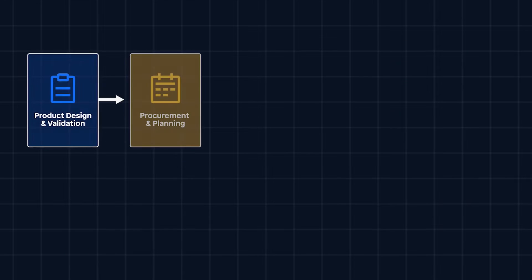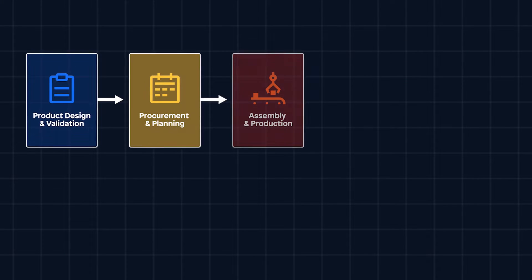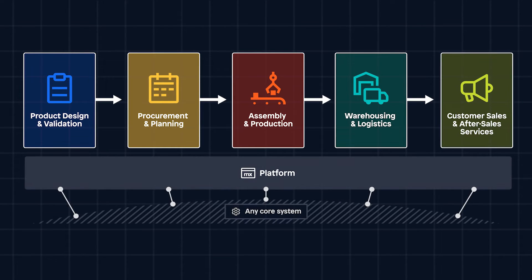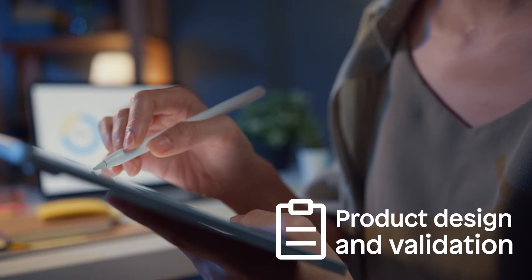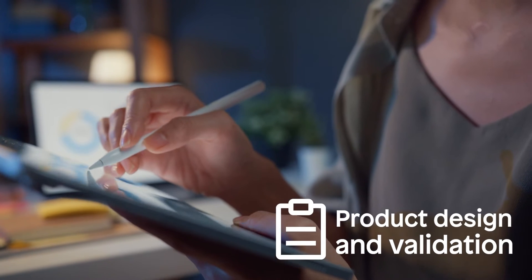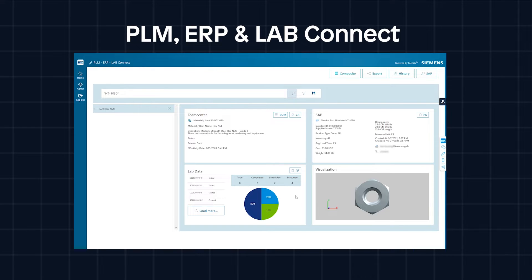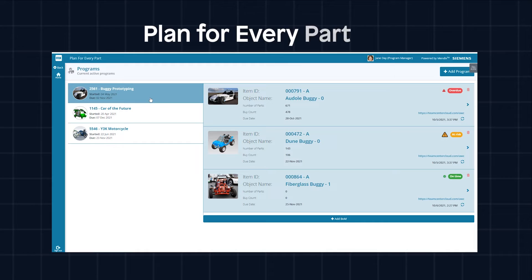For every stage of the manufacturing process, Mendix provides a suite of templates that makes creating solutions quick and easy. Product design and validation require the efficient use of time and resources. The PLM ERP and LabConnect template saves time by collecting your material related systems into a single view. The plan for every part template helps reduce budget overrun.